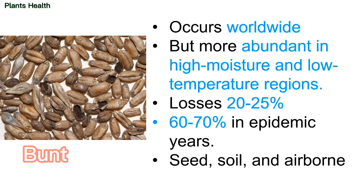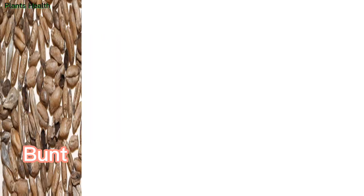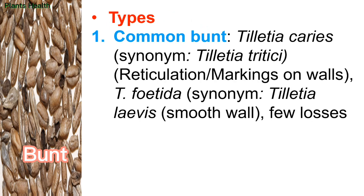As you can see in the figure, the wheat kernels are not normal — inside the wheat kernels is a powdery mass. There are three major types. Number one is common bunt, caused by the pathogen Tilletia caries, with synonym Tilletia tritici. These bunts have been differentiated based on the reticulation or markings on their special spore — teliospores.